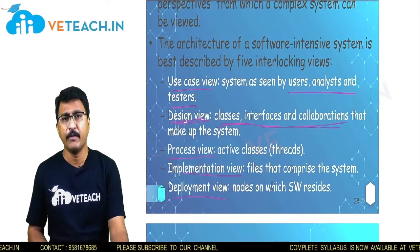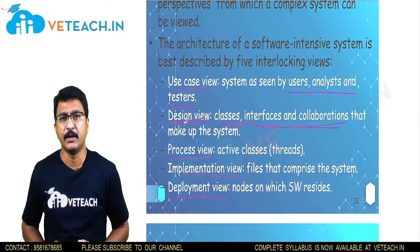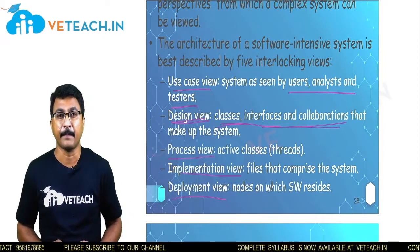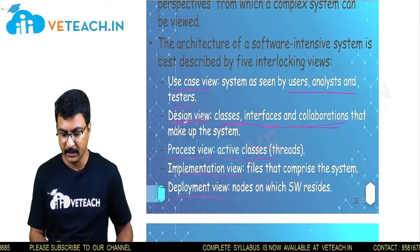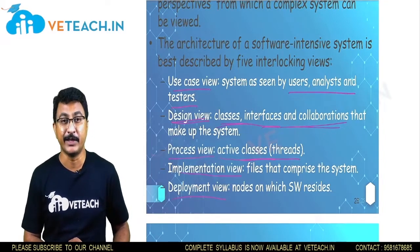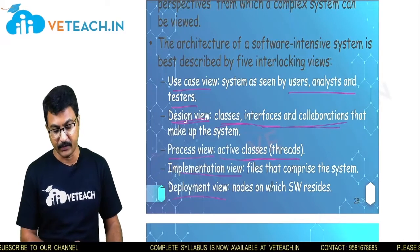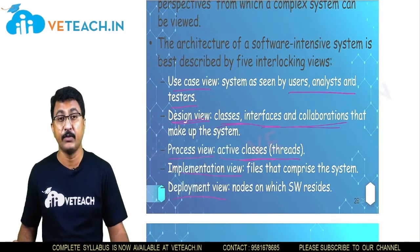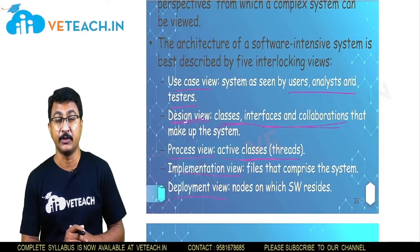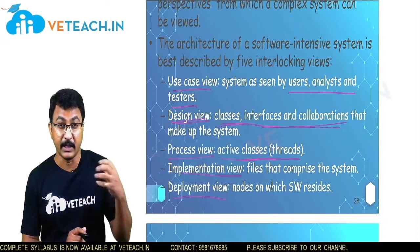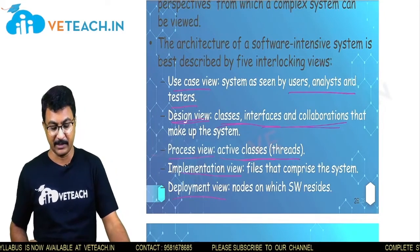There is a process view where you put in the active classes and they start executing their parts. When doing that along with threads — the active threads we tend to use — it is called a process view. Then comes the implementation view, where all those in the process views are combined together to generate physical, existing files.